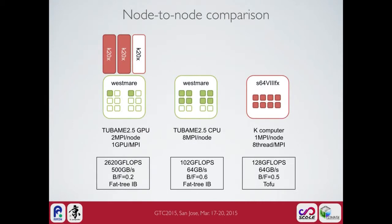We prepared three types of node configurations. For the GPU case on TSUBAME 2.5, we used two GPUs per node and two MPI processes. For the CPU case on TSUBAME 2.5, we used eight MPI processes per node. Additionally, we evaluated on the K computer, where we used one MPI process per node and eight threads per MPI — a hybrid case.